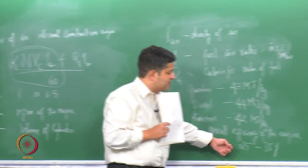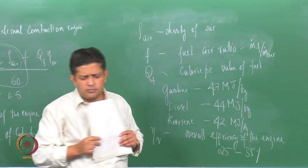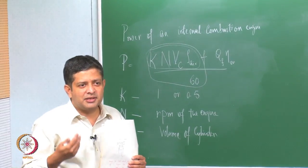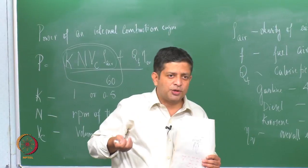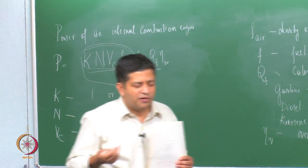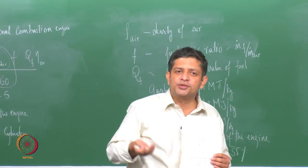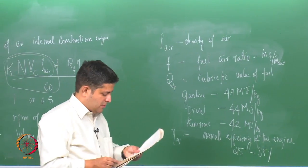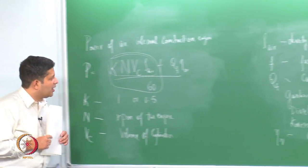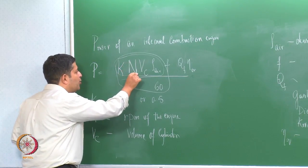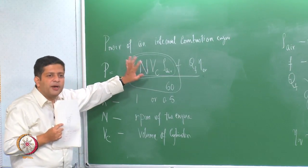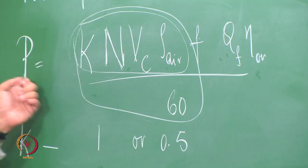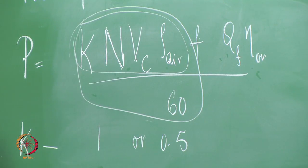The overall efficiency is a very small number, somewhere around 25 to 35 percent. A large part of this energy we lose in terms of exhaust gas heat — something to the tune of 50 percent of the energy stored in the fuel goes out as exhaust gas energy. One of the ways to increase the power of the engine is by operating it at a higher RPM, since power goes directly as RPM. So if you operate the engine at a very high RPM, the power would also increase.